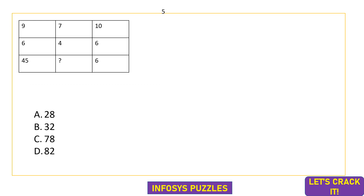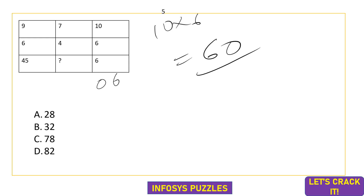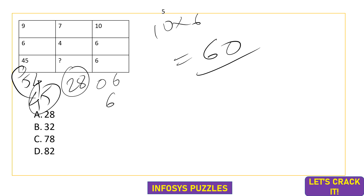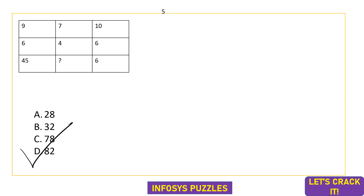Here: 9, 6, and 45 are given. 10×6 = 60, and reversing 60 gives 06 = 6. Similarly 9×6 = 54, and reversing gives 45, which is written in the third box. For 7×4 = 28, reversing gives 82. Option D is the correct answer.